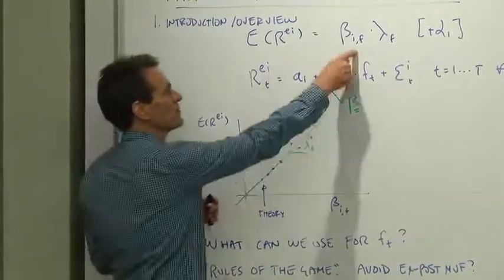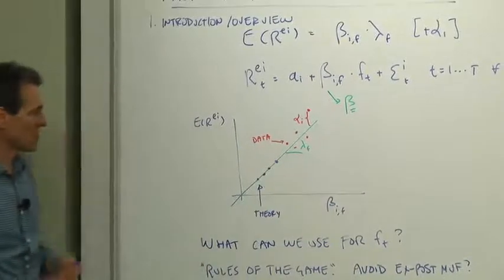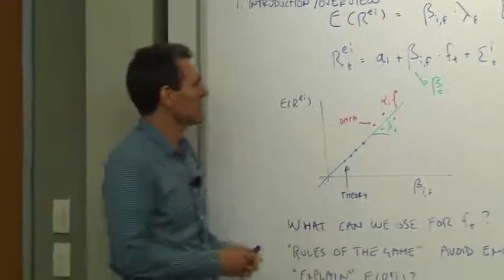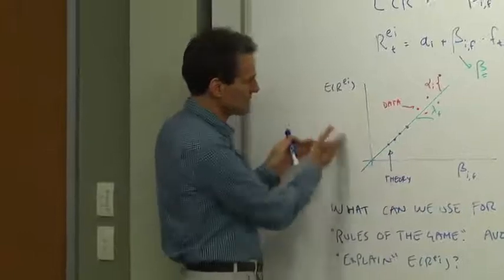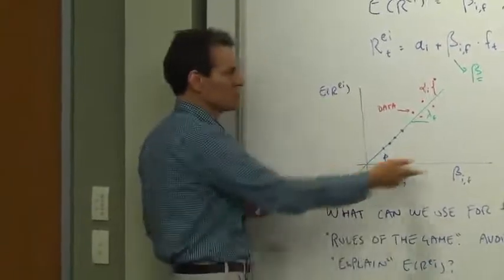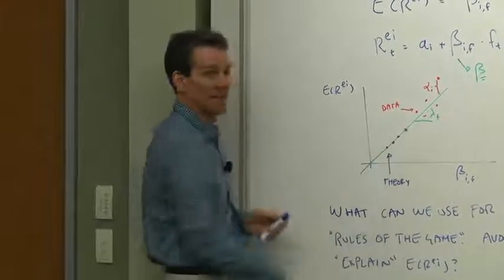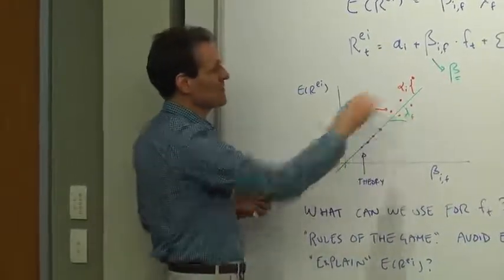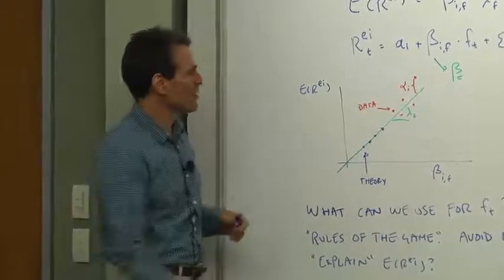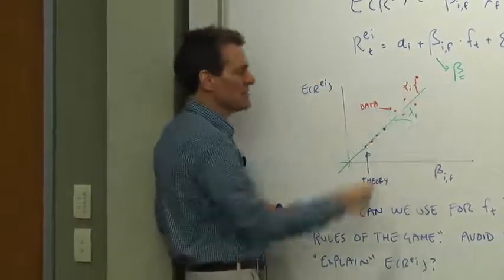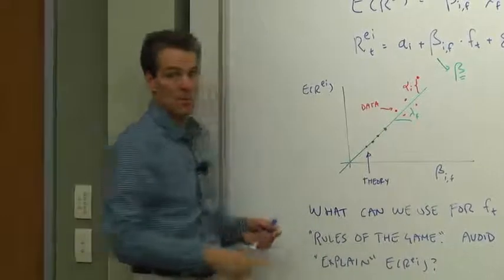Second, the point of the model is expected returns should be higher where betas are higher. It's a cross-sectional model. Expected returns across assets should be higher where betas are higher. Everybody should line in theory on the line; data is going to be some spread. We use the word alpha for the deviation and lambda for the slope relating expected returns to factor risk premium.